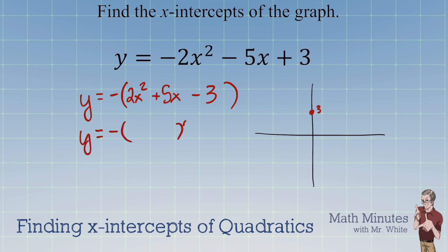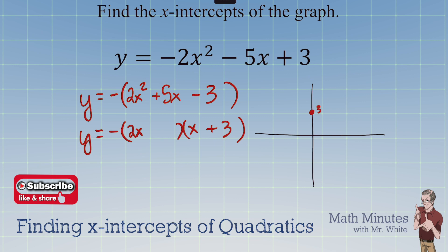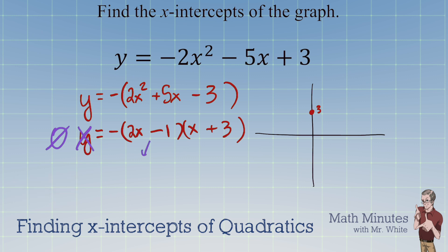We write y equals negative and then reverse FOIL the expression. It has to be 2x and x. The only way to make negative 3 is negative 3 and positive 1. Placing positive 3 here gives 6x on the outside, and we need negative 1x so that 6x minus 1x gives us 5x. So we have it factored. Now we set it equal to 0 and set each factor to 0 — you don't even have to worry about that minus sign out front. So x equals negative 3.